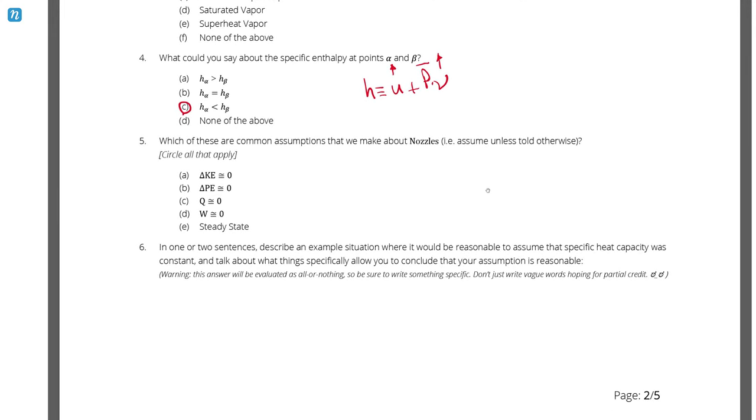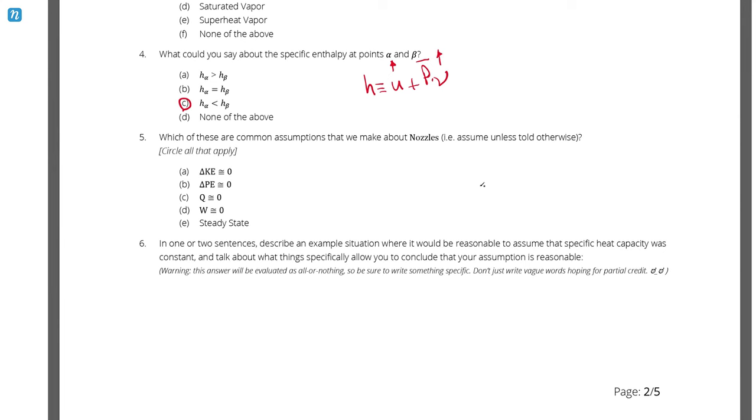Question number five. Which of these are common assumptions that we make about nozzles? Well, a nozzle, at least a subsonic nozzle, is a device whose purpose is to convert enthalpy into kinetic energy. So we have some inlet of our nozzle. Let's call this state one, maybe. And across the nozzle, it's going to be increasing in velocity. And since that energy is coming from the enthalpy, the pressure is going to be decreasing. So from one to two, I am increasing the velocity. That's not an equal sign. There we go. That's much more better. And I'm going to be decreasing the pressure.